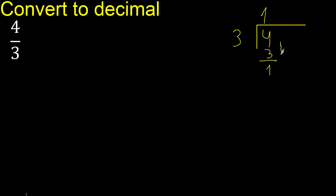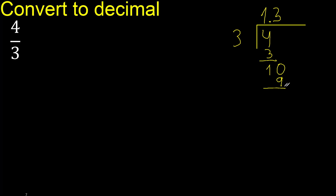Next, there is no more number, therefore we complete with 0 here after the decimal point. 0 point. 3 multiplied by 4 is 12, which is greater. 3 multiplied by 3 is 9. 10 minus 9 is 1.